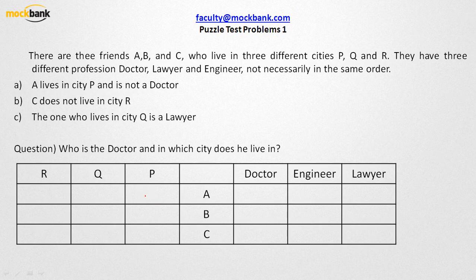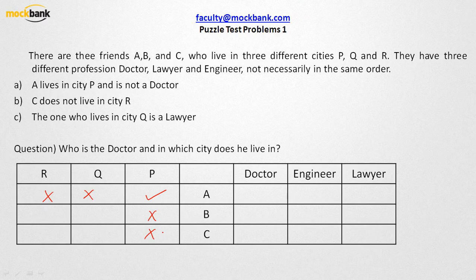Now let us see how we write it. A lives in city P, so R and Q for sure cannot have A — he cannot stay in city R and city Q since he lives in city P. And in city P, B cannot stay and C cannot stay. The idea is: the moment you get one tick in a row and in the column of that corresponding cell, all others will be crossed. As simple as that.